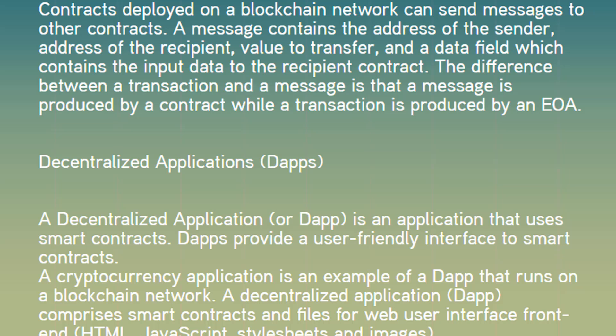Contracts deployed on a blockchain network can send messages to other contracts. A message contains the address of the sender, address of the recipient, value to transfer, and a data field which contains the input data to the recipient contract. The difference between a transaction and a message is that a message is produced by a contract, while a transaction is produced by an EOA.